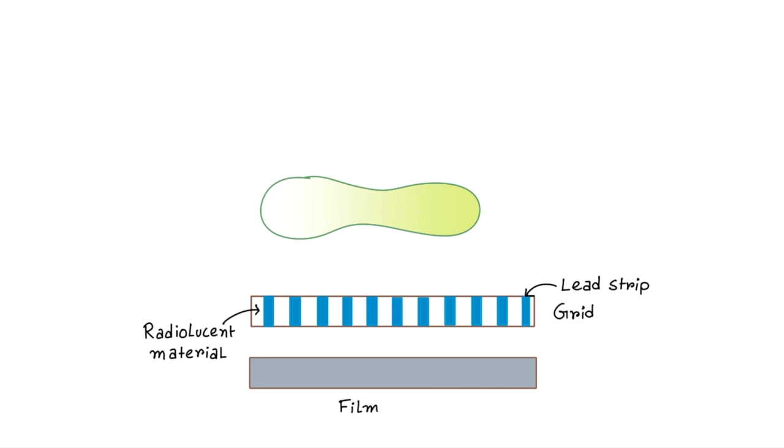Let's see how it works. Grid is a sheet of radiolucent material in which lead strips are incorporated. Here this is the radiolucent material and these are lead strips. They are parallelly placed with each other.